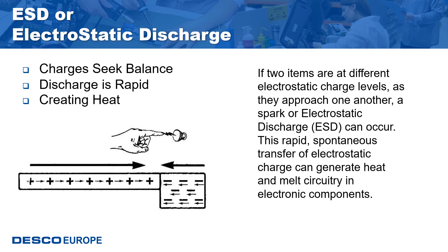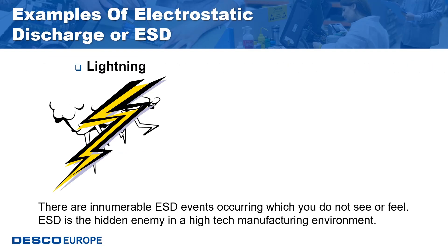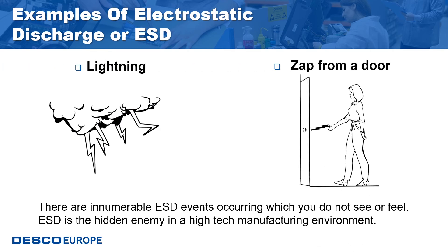ESD, or electrostatic discharge, is the rapid spontaneous transfer of electrostatic charge induced by a high electrostatic field. Usually the charge flows through a spark between two bodies at different electrostatic potentials as they approach one another. If two items are at different electrostatic charge levels as they approach, a spark or electrostatic discharge can occur. This rapid spontaneous transfer can generate heat and melt circuitry in electronic components. In a normal environment like your home, innumerable ESD events occur, most of which you do not see or feel.